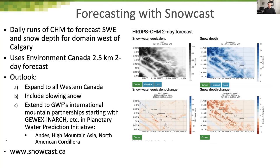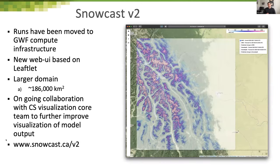On the forecasting side, Nick Wayand set up the initial idea of Snowcast, which I've continued. It's daily runs of CHM for an area west of Calgary in the Rockies, using GEM 2.5 km two-day and seven-day forecasts to produce SWE and snow depth estimates. The idea is a quasi-operational format that can be expanded to western Canada, including blowing snow, and extended to other GWF international partnerships such as the Andes, High Mountain Asia, and the North American Cordillera. You can see this at snowcast.ca.